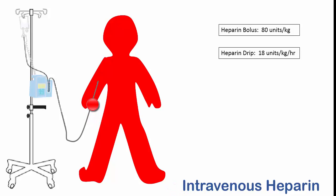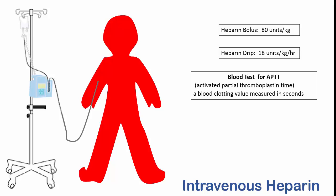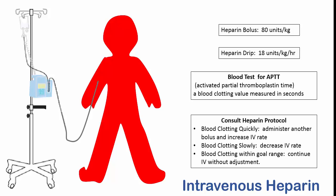But we may be wondering: did we get it right? Did we get the heparin level exactly where it should be? We need to test the patient's blood to see what the clotting time is. So we'll draw some blood and send it to the lab for an APTT time — a clotting value that is measured in seconds. Based on the result from this test, we'll change or keep the heparin dose the same. We know what to do based on a heparin protocol.